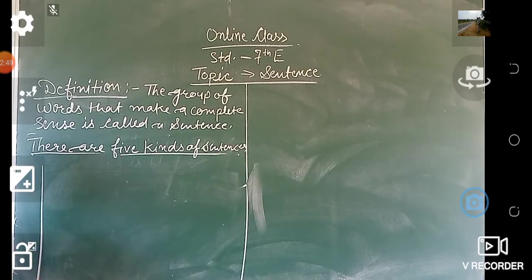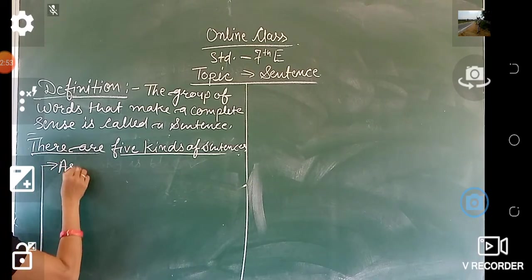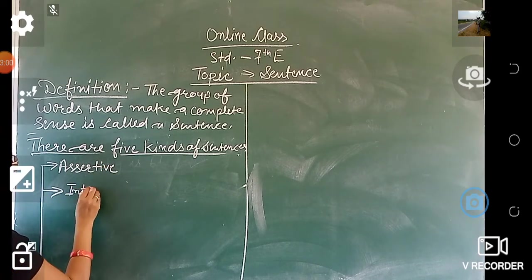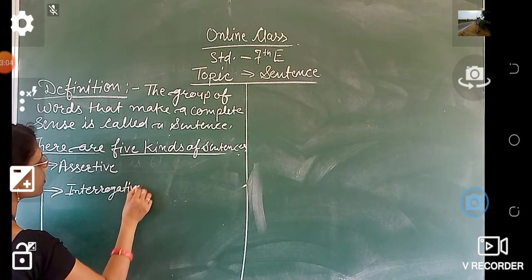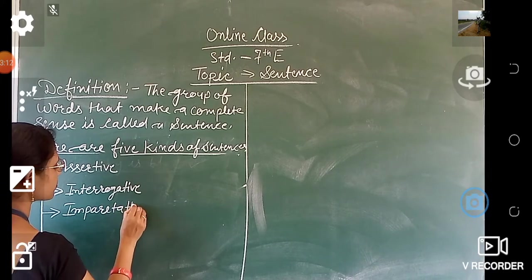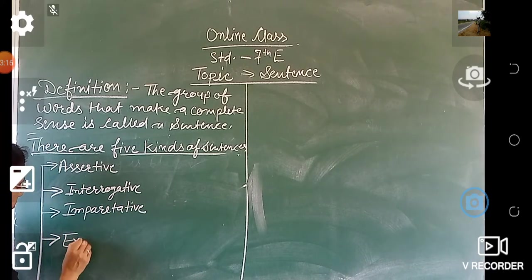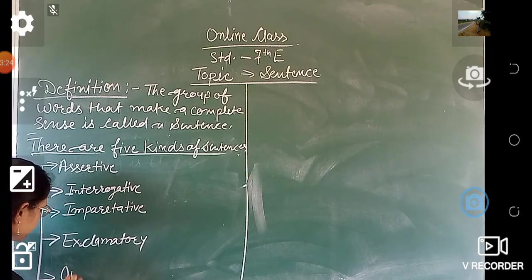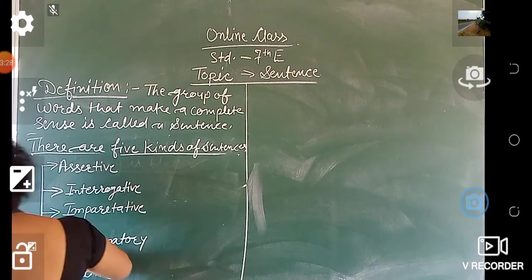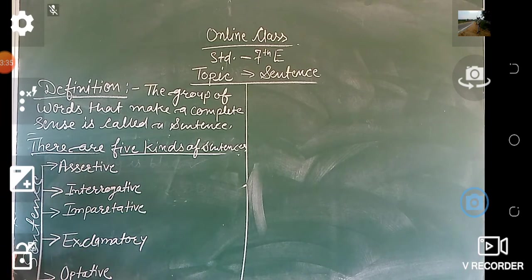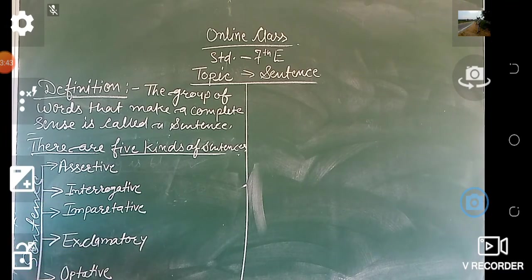The first kind is assertive. The second one is interrogative. The third one is imperative. The fourth one is exclamatory. And the fifth one is optative.